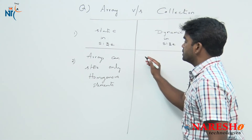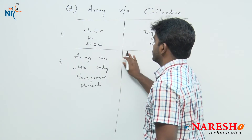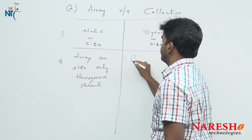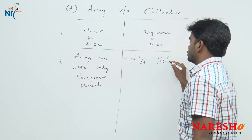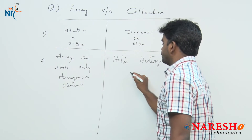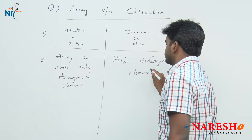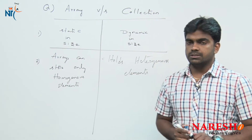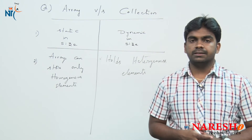But collections are not like that. Collections can hold heterogeneous elements — meaning different types of elements. So one element can be an integer, one can be a float, one can be a double, and so on.